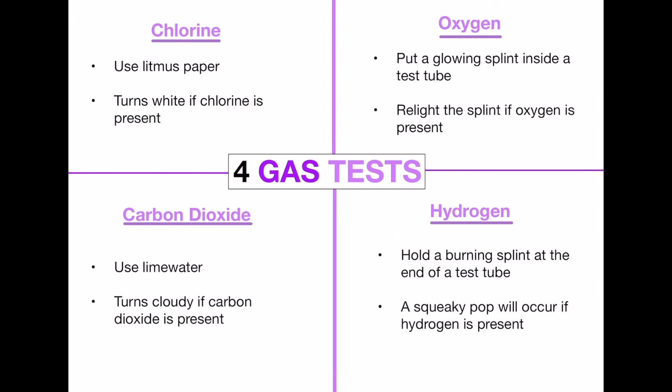There are four gas tests that you need to know about: chlorine, oxygen, carbon dioxide, and hydrogen. These are tests for gases — so if you think chlorine is somewhere you can use the chlorine test to test for it. For the chlorine test you would use litmus paper, and the litmus paper will turn white if chlorine is present. For oxygen, you would put a glowing splint inside a test tube with that gas inside it, and if oxygen is present it will relight the splint.